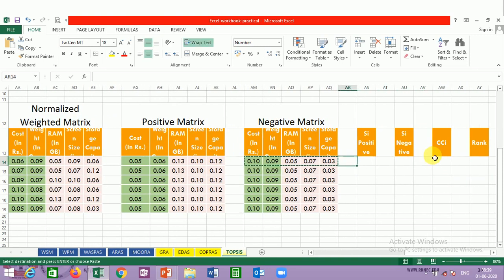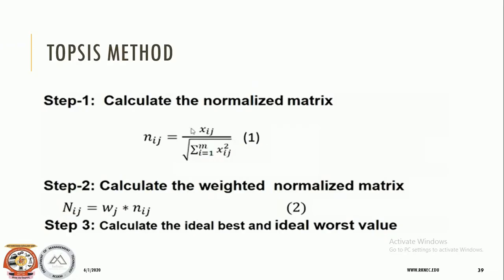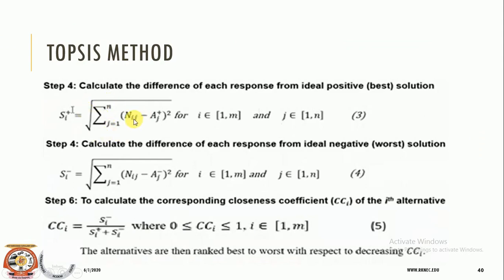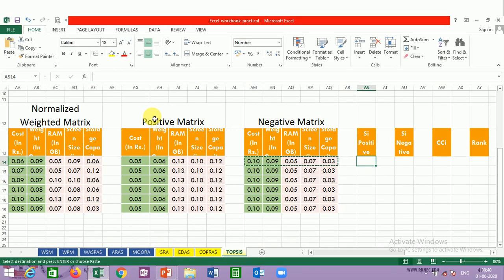Now we need to calculate the positive difference Si+ and the negative difference Si-. The formula is the square root of the summation of (N_ij minus A_ij positive) squared, where N_ij is the normalized weighted matrix value minus the positive ideal distance, squared, under the square root. In Excel, we will use the SQRT function with summation and squaring. Normalized value minus positive matrix value — make a square of it. This is the first term; since summation requires all criteria, we add the same calculation for the second, third, fourth, and fifth criteria terms respectively.